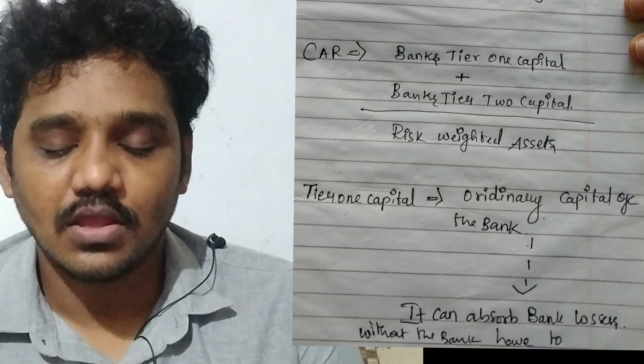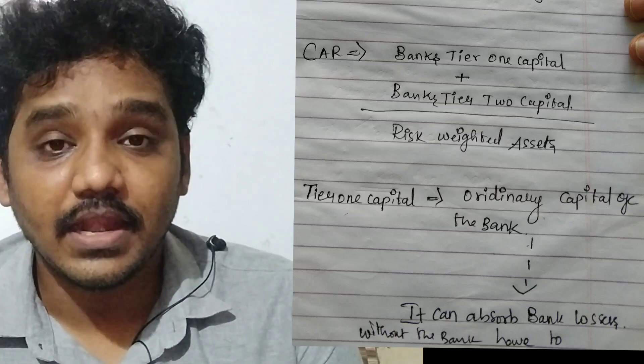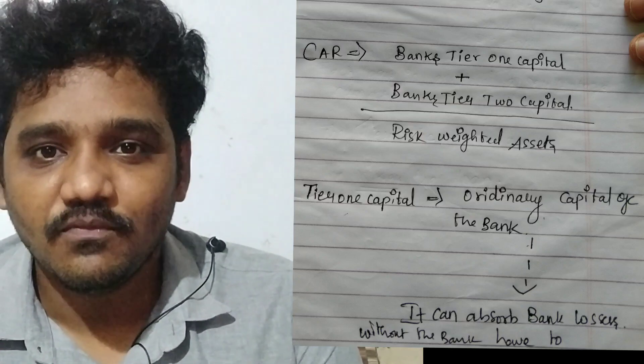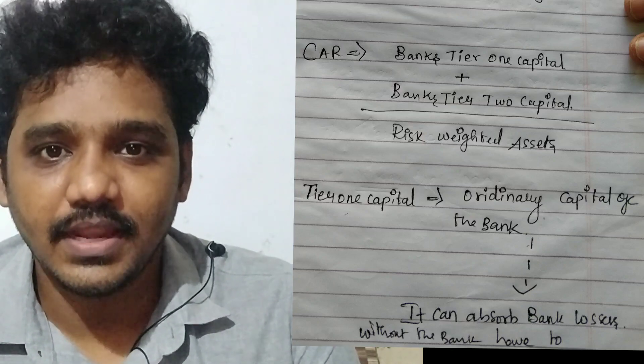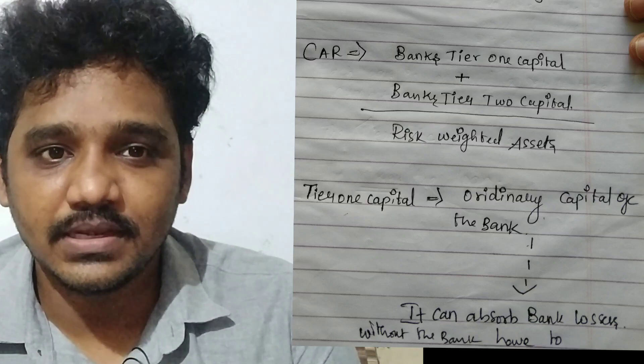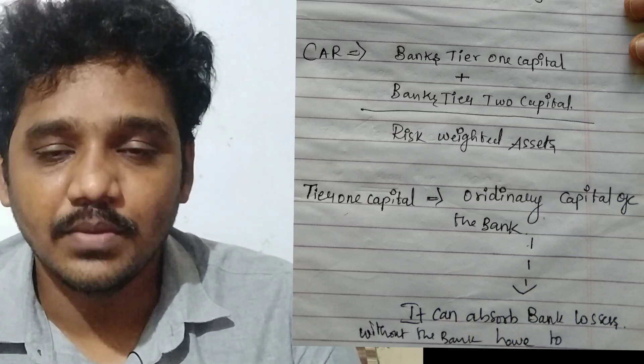Tier 1 capital is the primary funding source of a bank. It consists of shareholders' equity plus retained earnings, and is also called the ordinary capital of a bank. It can absorb the bank's losses without affecting its trading. Tier 2 capital consists of revaluation reserves, hybrid capital instruments, subordinate term debt, and general loan loss reserves. Once Tier 1 capital gets exhausted, Tier 2 capital will be used.